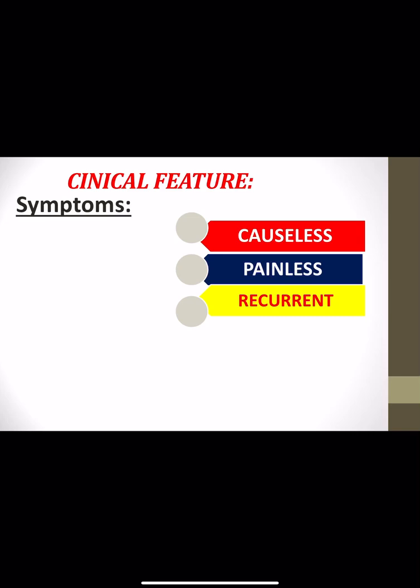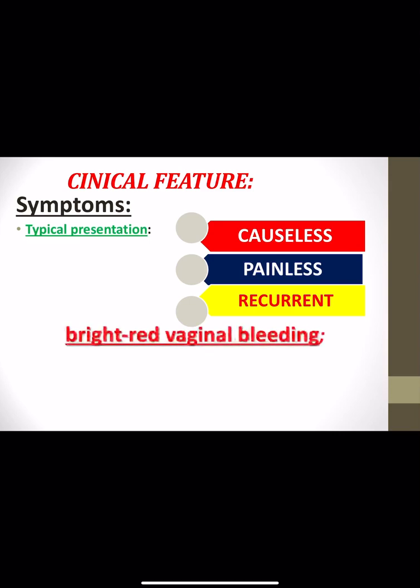Patients with placenta previa present with a typical picture: causeless, painless, and recurrent bright red vaginal bleeding in the third trimester. Sometimes patients wake from sleep with an attack of vaginal bleeding. Although it is causeless, it can sometimes be precipitated by digital examination or sexual intercourse. Although it is painless, it can sometimes be associated with pain if labor is also present. Fetal movements are still present after bleeding in the majority of cases.